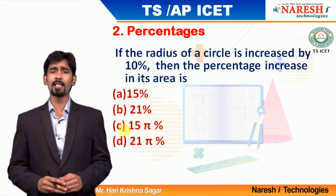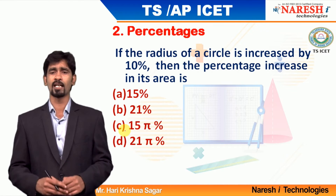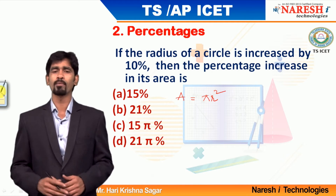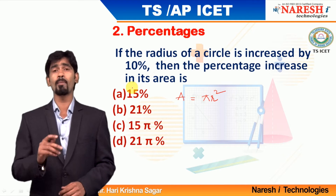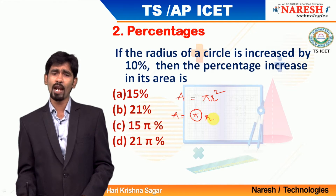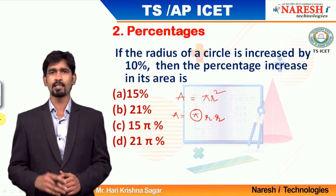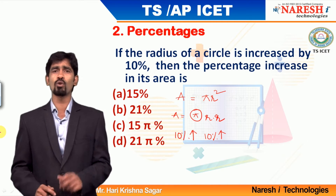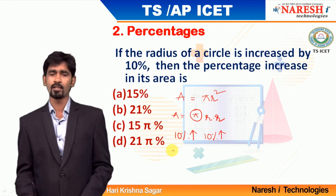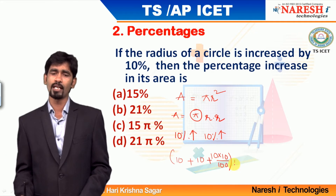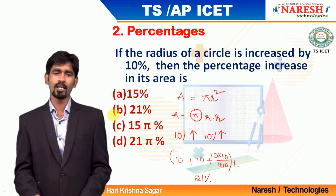If the radius of a circle is increased by 10 percentage, what is the percentage increase in area of the circle? The area of a circle is pi r square. Pi is a constant value, so there is no effect from it, and we have radius into radius. The increase in radius is 10 percentage, happening successively 2 times. The net increase will be 10 plus 10 plus 10 into 10 divided by 100, which is 20 plus 1 — that is 21 percentage. Mark your answer choice as option B.